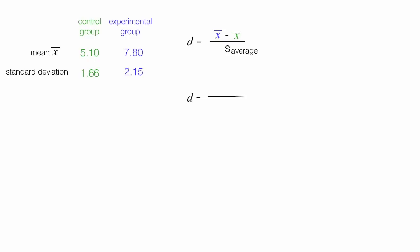We take 7.80 minus 5.10 divided by the average standard deviation. That's the average of them. Take 1.66 plus 2.15 divided by 2, which equals 3.81 divided by 2, which is equal to 1.90. So d is equal to 7.8 minus 5.1, which is equal to 2.7 divided by 1.90. And this equates to d equals 1.42, which would be considered a very large effect.